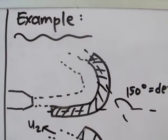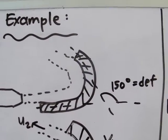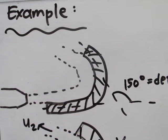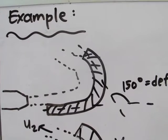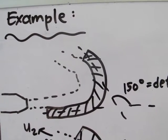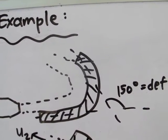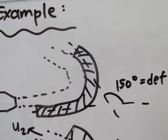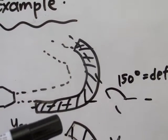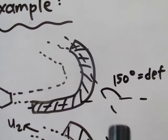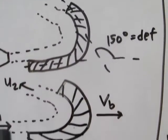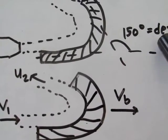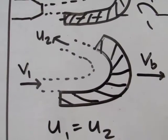Let me give you an example regarding this topic. A 75mm diameter jet has a velocity of 33.5 meters per second. It strikes a blade moving in the same direction at 21.3 meters per second. The deflection angle of the blade is 150 degrees. Assuming no friction, calculate the x and y components of the force exerted by the water on the blade.